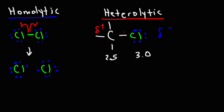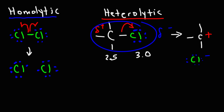So when that bond breaks, those two electrons are going to go to the chlorine atom. What we get is a carbocation — a carbon with a positive charge — and a chloride ion — chlorine with a negative charge. This example is like the first step in an SN1 reaction, where the leaving group leaves.